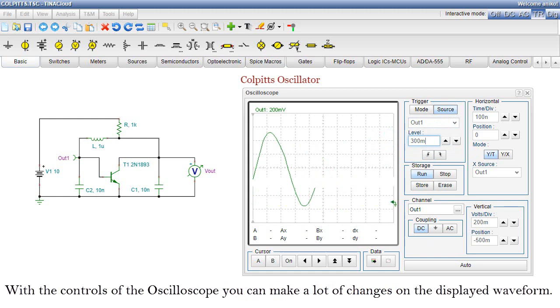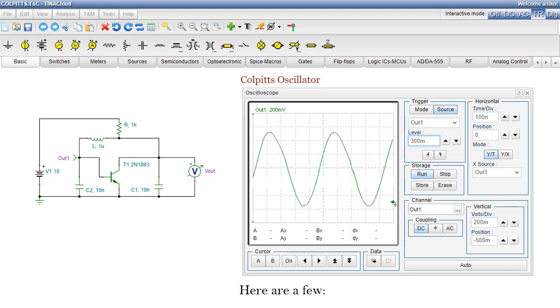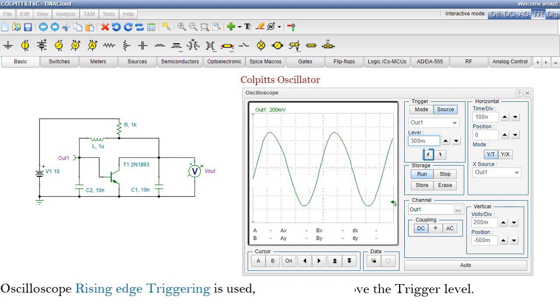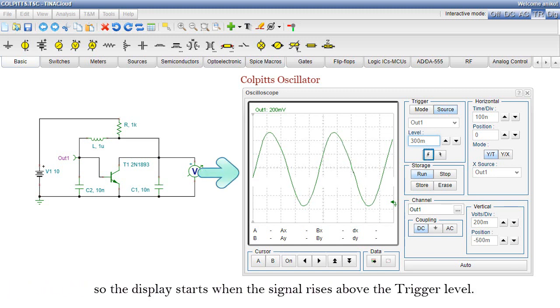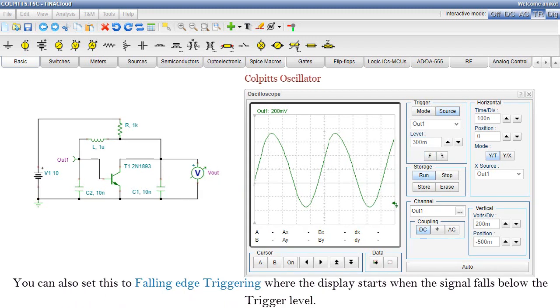With the controls of the oscilloscope, you can make a lot of changes on the displayed waveform. Here are a few. By default, on the oscilloscope's rising edge, triggering is used. So, the display starts when the signal rises above the trigger level. You can also set this to Falling Edge Triggering, where the display starts when the signal falls below the trigger level.